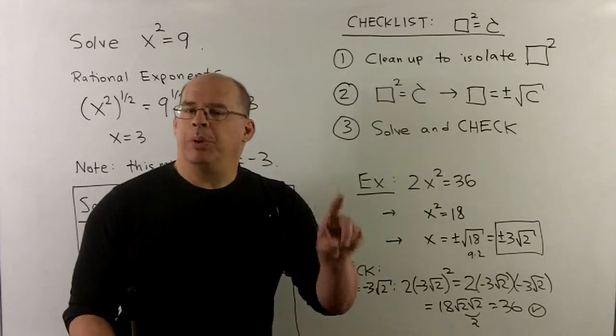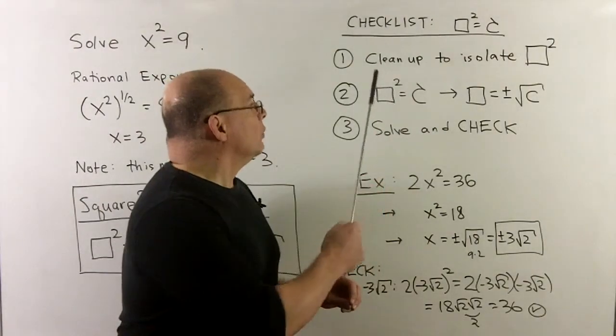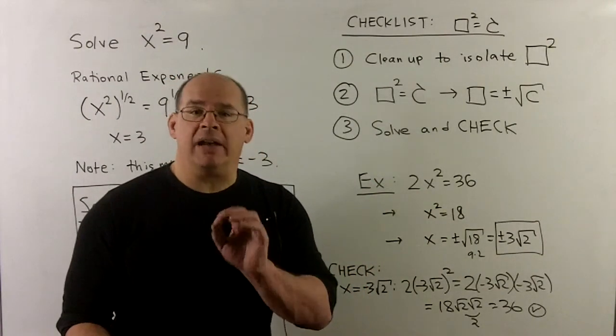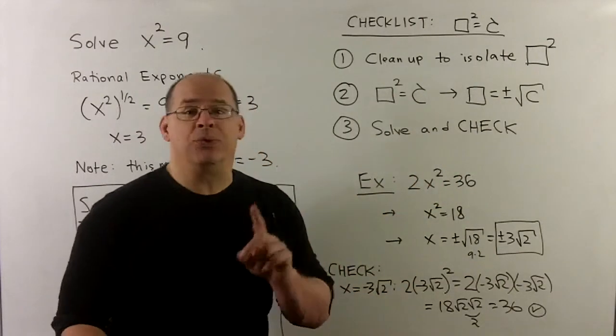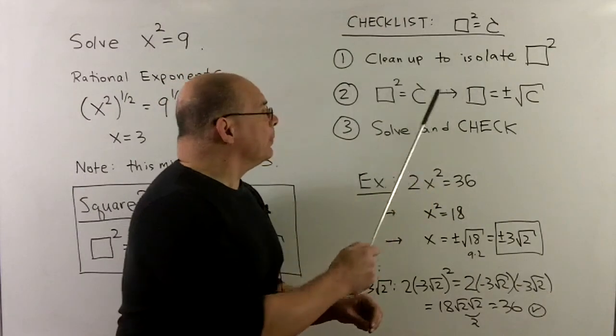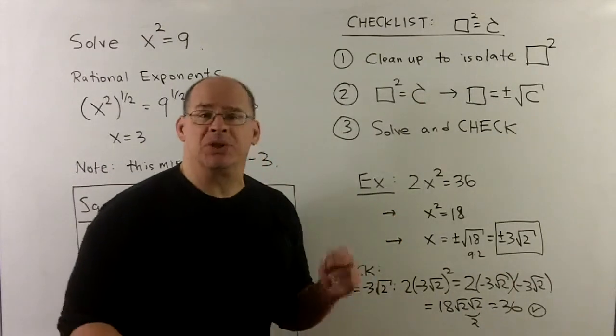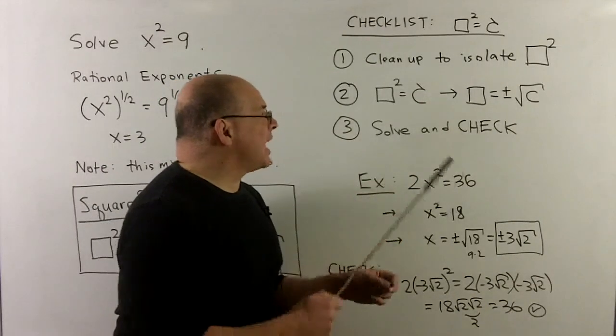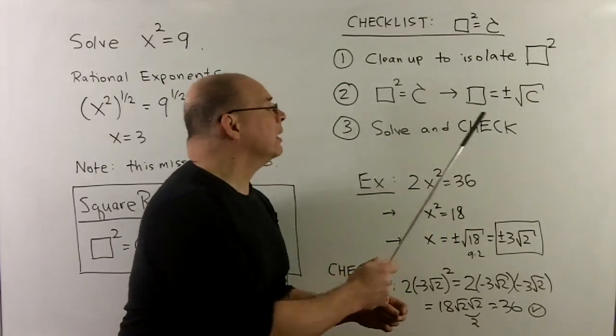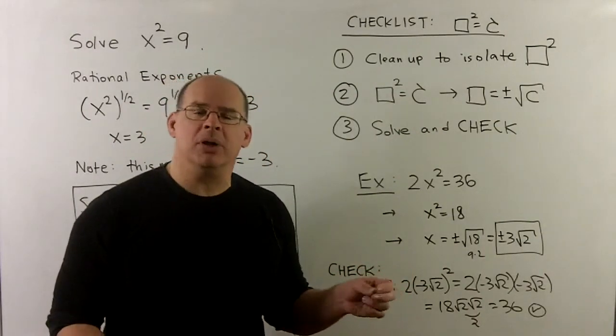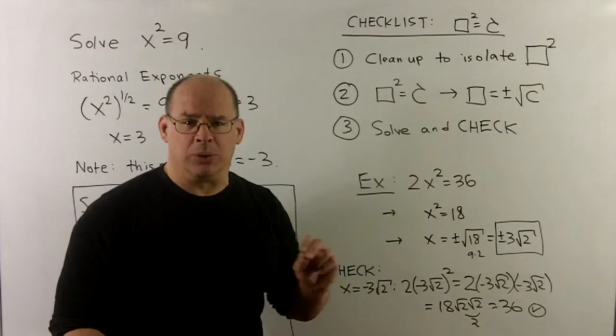Now, let's put this together in a checklist for how our problems are going to go. First, the first step is we can't invoke the square root property until we've isolated the box squared. So that's our first step. Once we've done that, we'll go to box squared equal to c, goes to box equal to plus minus square root of c, square root property. Then, we'll solve for x and whatever is left over. So that's going to be two equations. And then, when we get our answers, we want to check our work because with square roots you can't always be sure whether you've done operations that produce fake solutions.